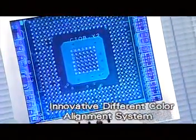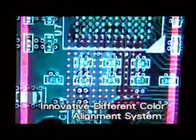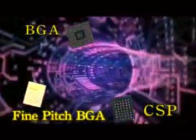BGA936USB applies the innovative different color alignment system to let BGA's solder balls appear apparent contrast to PCB pad's position, which makes the aligning state of BGA, CSP, fine-pitch BGA